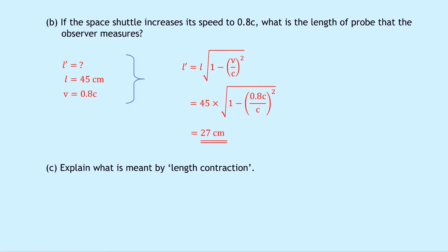Lastly, part C says explain what is meant by length contraction. Well this is a definition straight from the notes. So length contraction is the apparent decrease in length of an object that is moving relative to an observer. So the object itself will appear to be squashed only in the direction of travel and that's something important to remember.